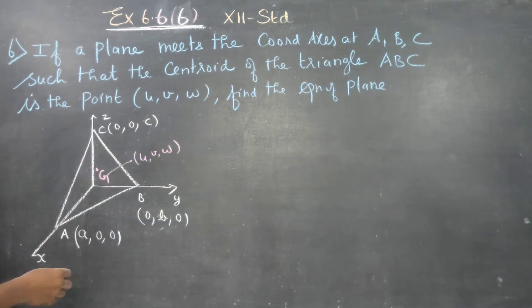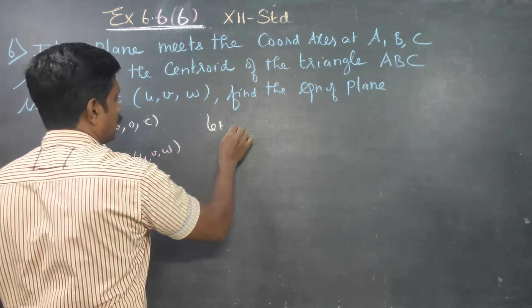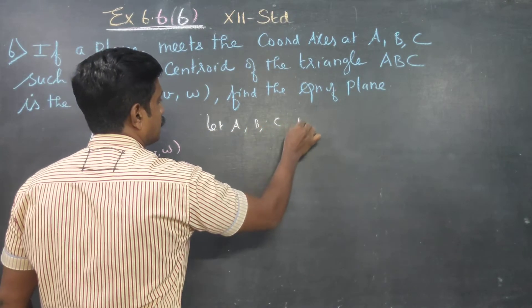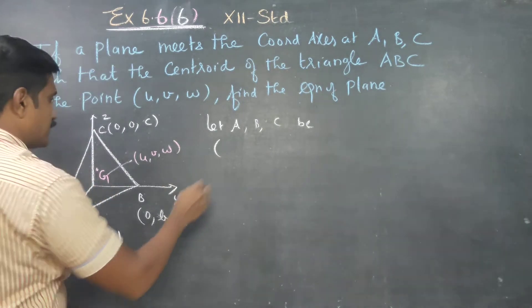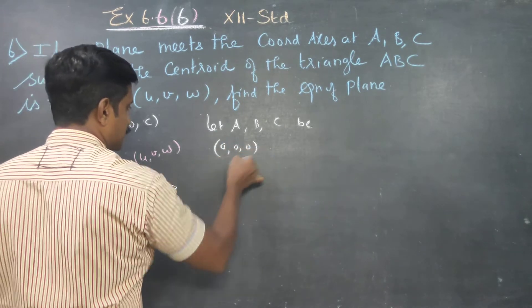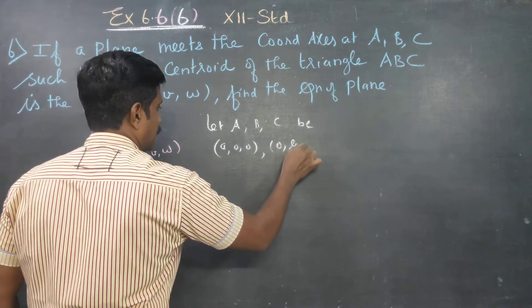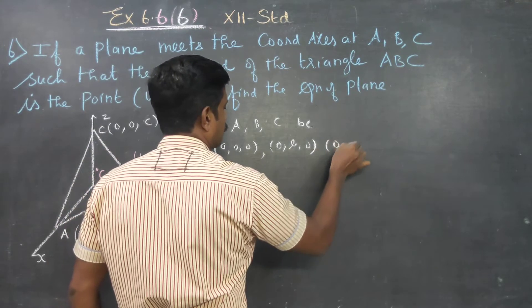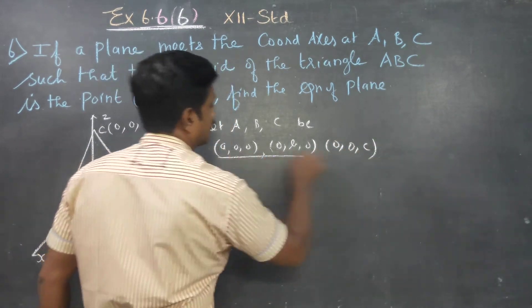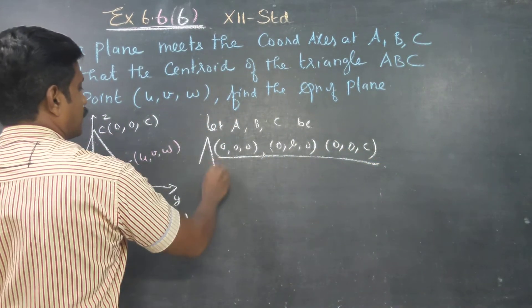Let A, B, C be the points where the plane meets the axes. So A is at (a, 0, 0), B is at (0, b, 0), and C is at (0, 0, c).